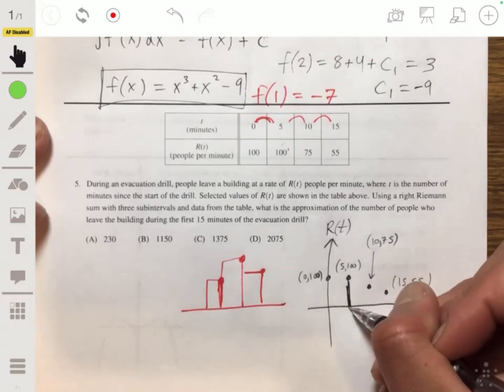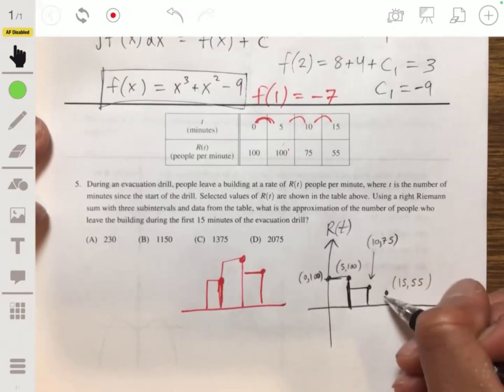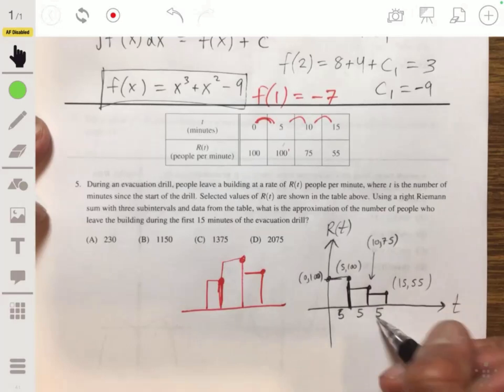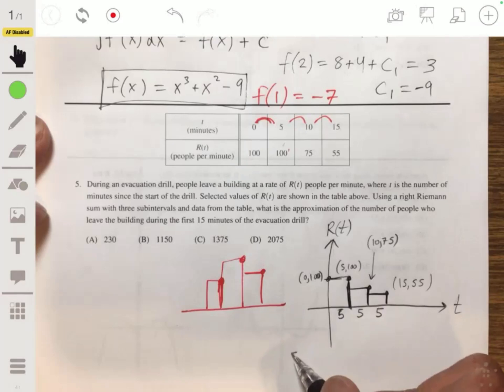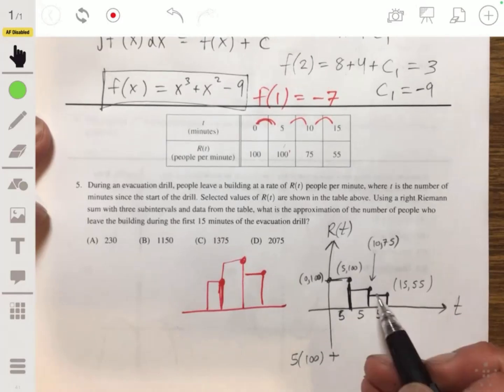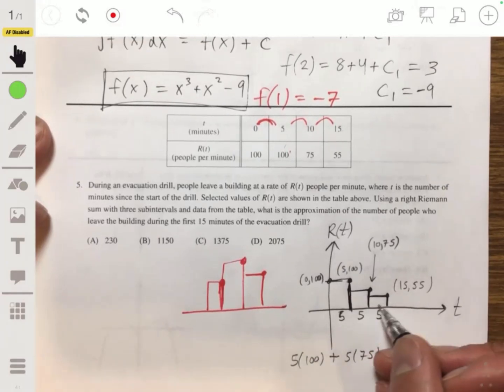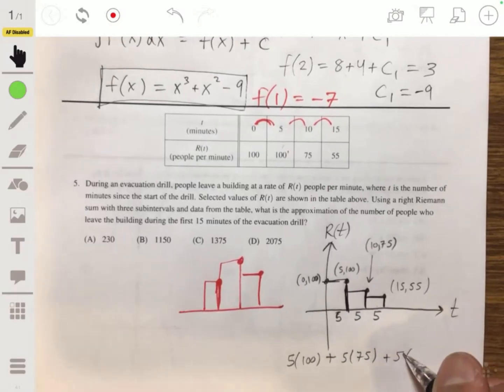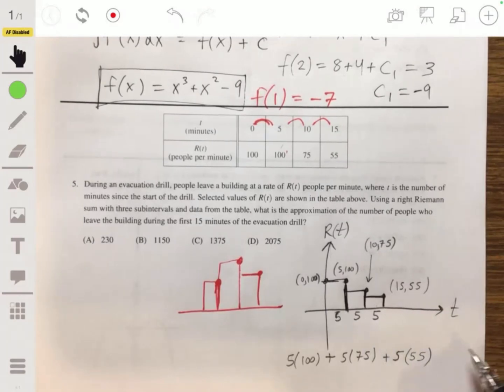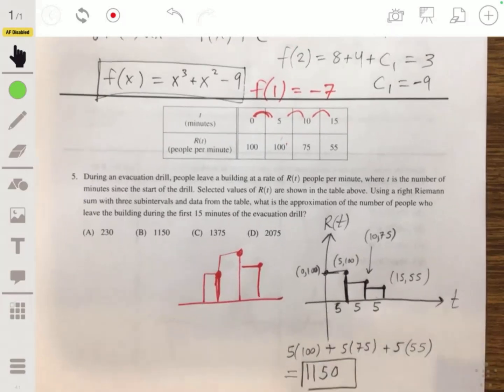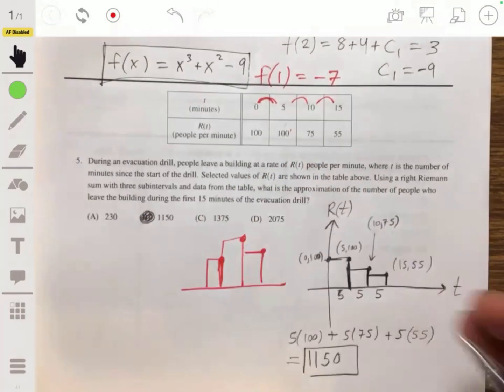So a right Riemann sum will be rectangles like this. Each of these have a base of 5. So we're going to have 5 times 100 plus 5 times 75 plus 5 times 55, and that will give us 1150, and so the answer is B.